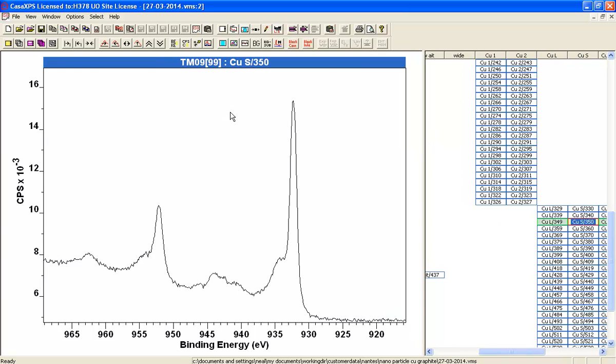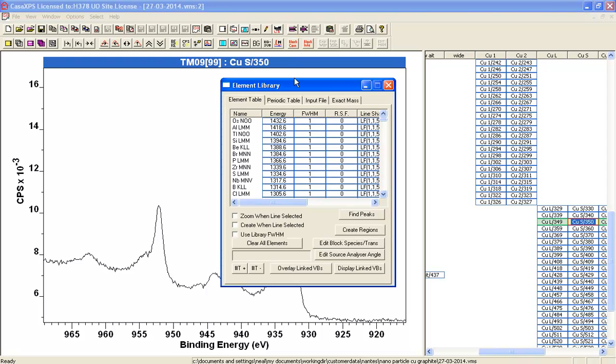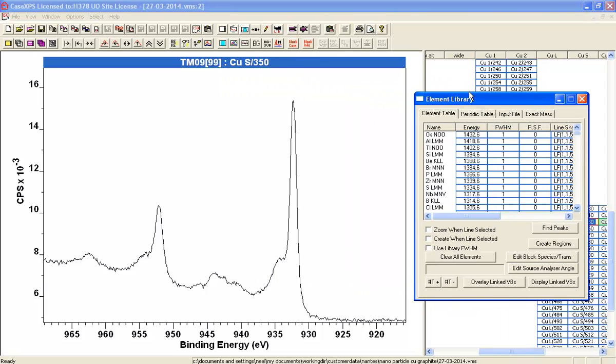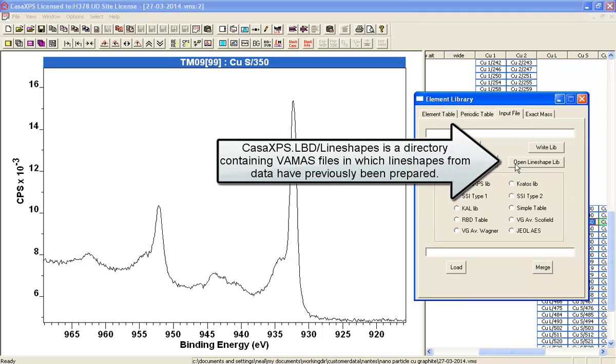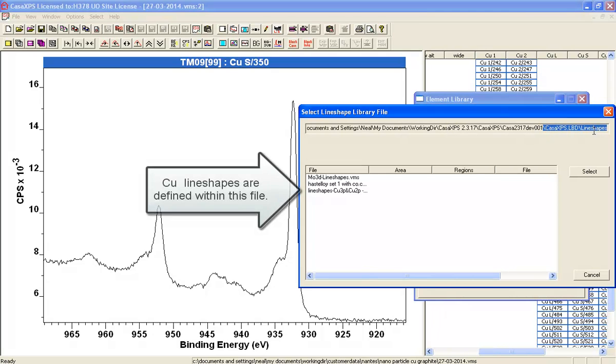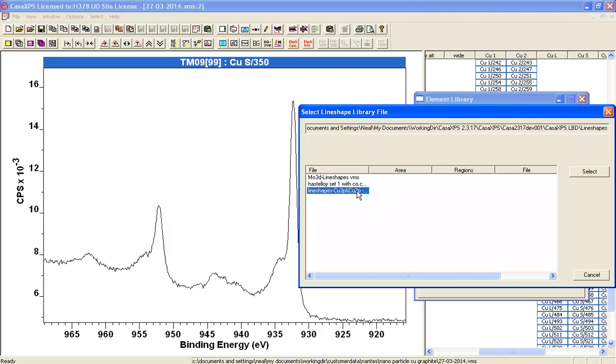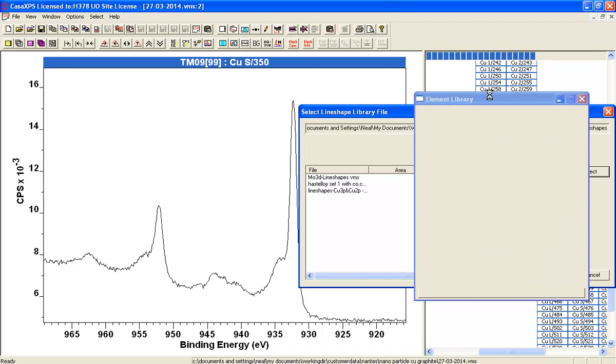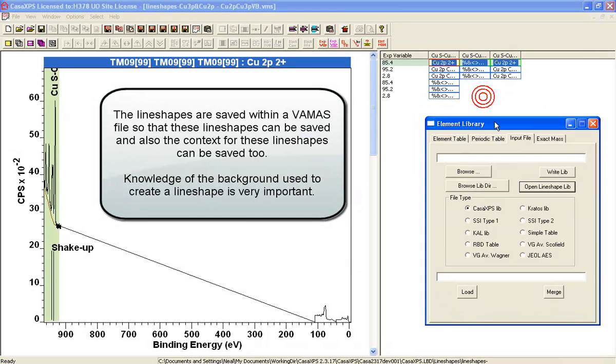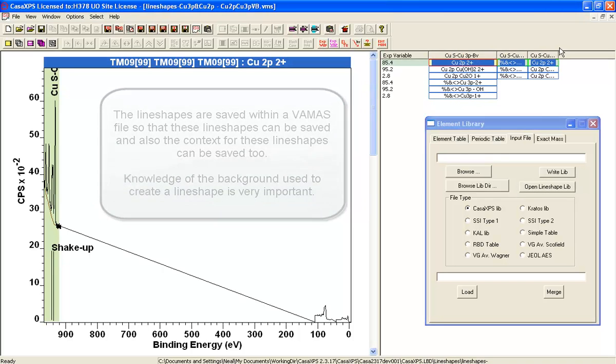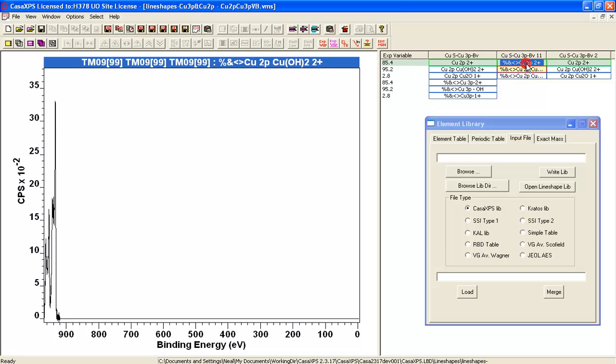And what I've done previously is I've prepared within the element library some standard line shapes that have been derived previously. And they've been saved in a directory that when I select open line shape, and this is the directory you can see, it's in the CasaXPS.lib line shapes directory, and I've prepared a file which when I select and I open, loads into the current session a set of line shapes that have been derived from data.